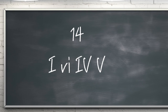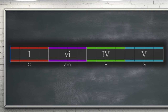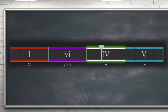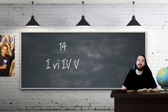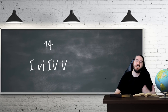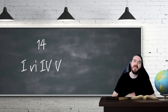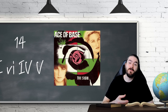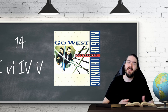At number 14 is a variation on the previous example: 1-6-4-5. Sometimes simply moving chords in the progression around can produce a fresh sound that your song is crying out for. Examples of this progression include The Sign by Ace of Base and King of Wishful Thinking by Go West.